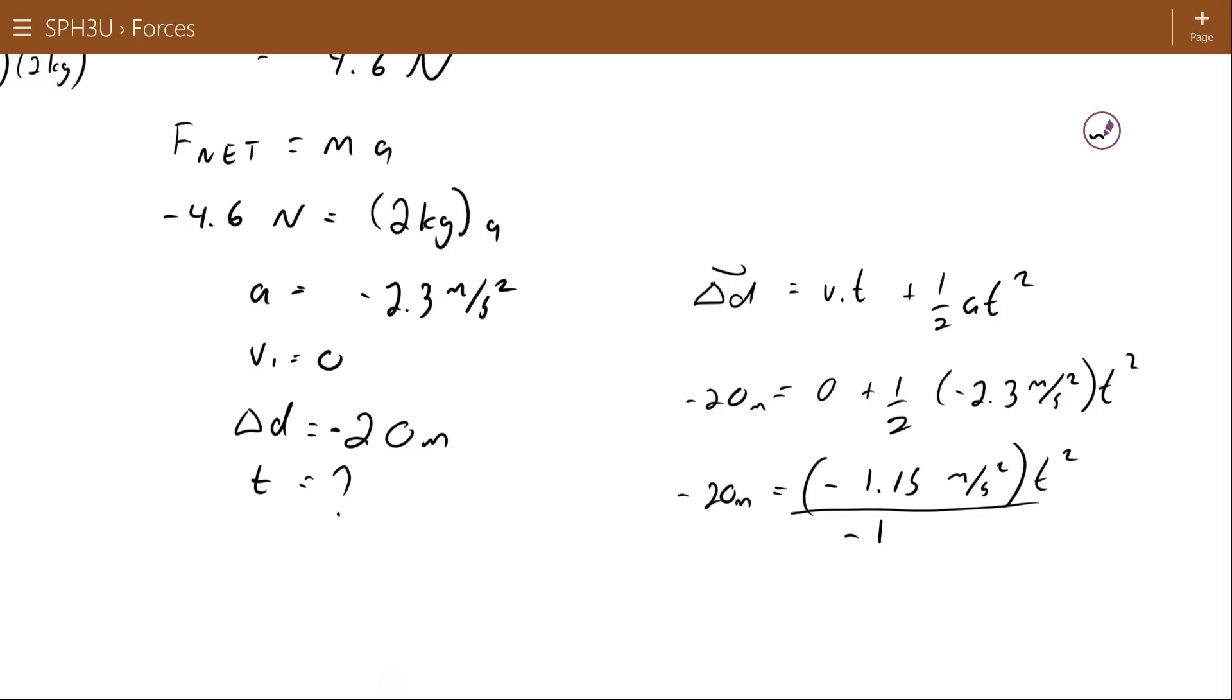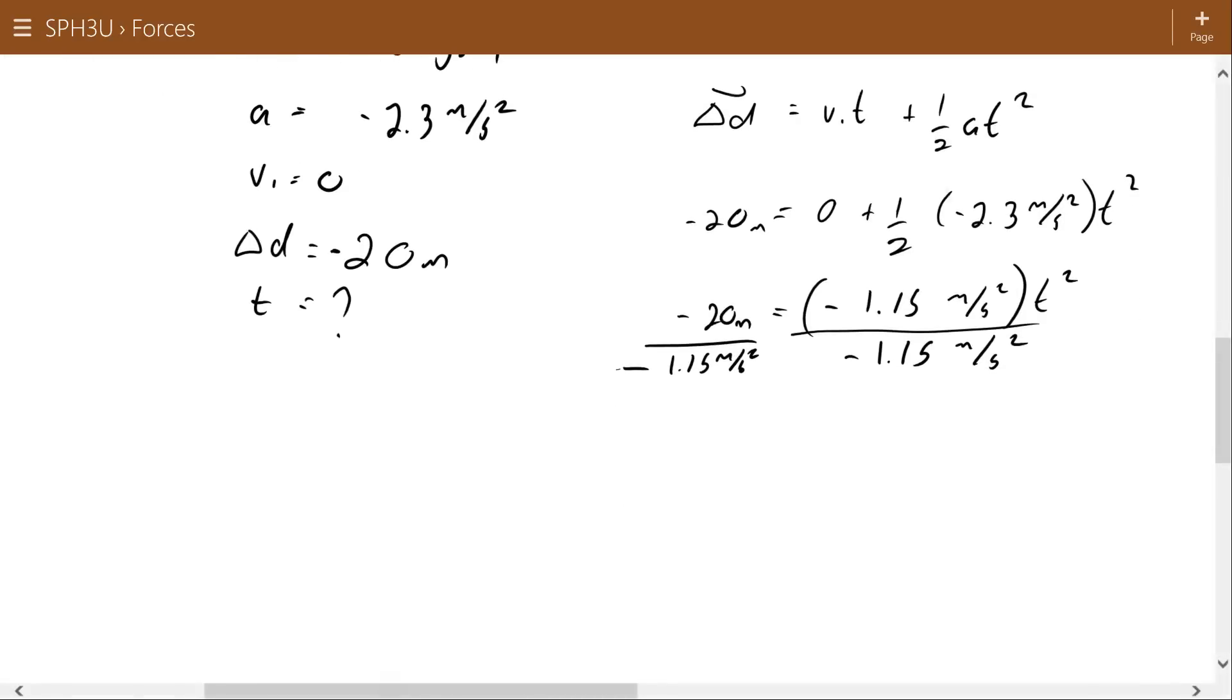Dividing both sides by that negative 1.15, 20 divided by 1.15 I get 17.4 seconds - t squared, second squared. Square rooting both sides, so it would take 4.2 seconds to get that bucket to the bottom of the well, or really you made it take 4.2 seconds to get the bucket to the bottom of the well so that the bucket doesn't go too fast and break when it hits the bottom.